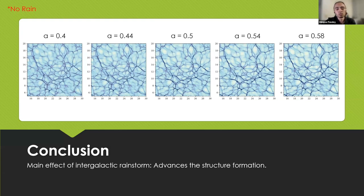The main conclusion of what we have been able to do so far is that intergalactic rainstorm advances the structure formation. Whether it introduces some peculiar structure characteristics is yet to be verified, but at least we can be sure that if there is an intergalactic rainstorm, then it advances the structure formation.